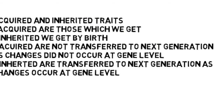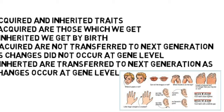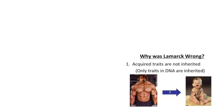Number two, acquired and inherited traits or characters. Acquired characters are those which we get in the course of our lifetime. For example, a person building a six-pack muscular body is an acquired character — that will not be transferred to the next generation, because such changes do not occur at the gene level. Whereas inherited characters are those which we get by birth, and they will be transferred to the next generation because changes occur at the gene level. For example, a person's color blindness is decided by genes, so that character will be transferred to the next generation.